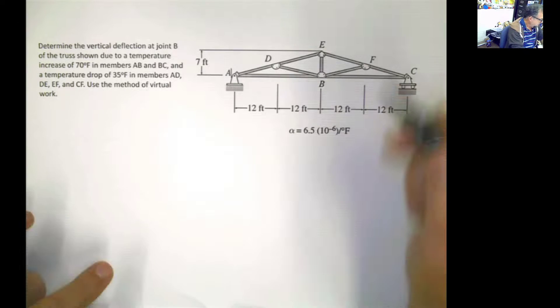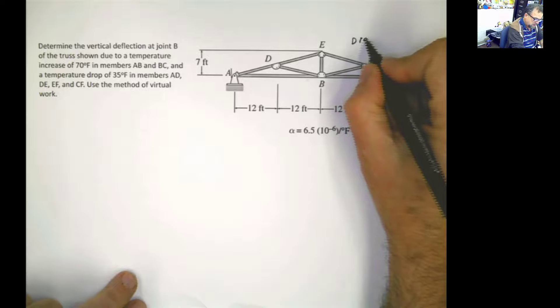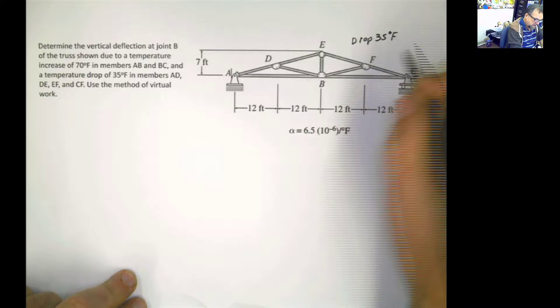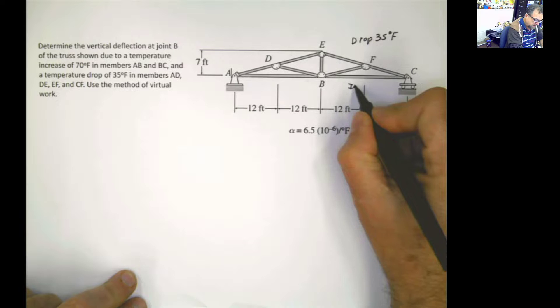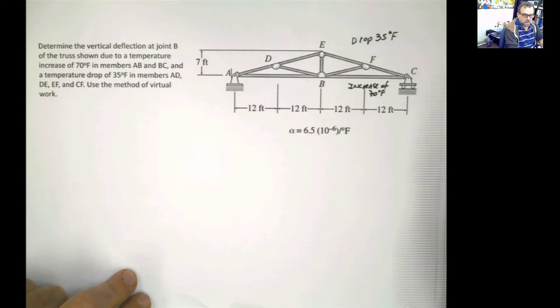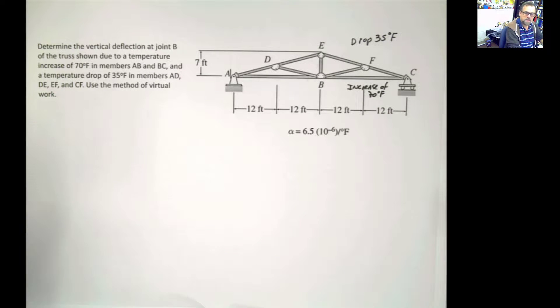So meaning, in the top part here, we're going to have a drop of 35 degrees Fahrenheit. And I'm going to have an increase here of 70 Fahrenheit. I personally don't understand why this happened. But hey, this is what the problem is asking, right?